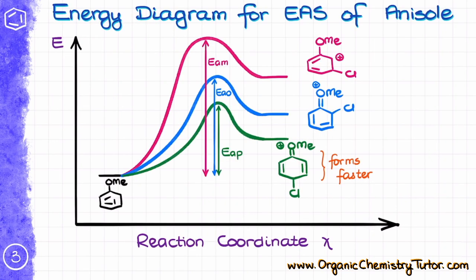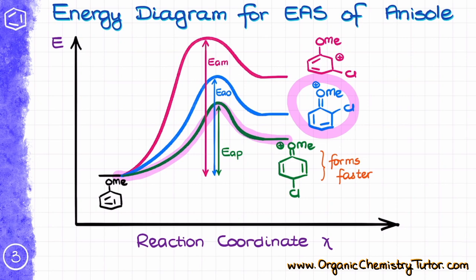We can also represent this as an energy diagram. This energy diagram is not to scale by any means, but nonetheless we can see that the activation energy of the para-intermediate is the lowest, so this intermediate will form the fastest. The ortho-intermediate is a little less favored, mainly due to steric hindrance between the methoxy group and the chlorine, so it is just a little bit more difficult to attack that position. There are also some electronic effects that make the ortho-intermediate formation less favorable, but let's not overcomplicate it for now.